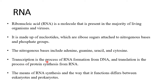Transcription is the process of RNA formation from DNA. A strand of DNA is used as a template and copied to make a complementary strand, which is the mRNA. Translation is the process of protein synthesis from RNA — the codes present on the mRNA strand are used to produce the protein. This is how the central dogma works, and it happens in every cell. The means of RNA synthesis and the way it functions differs between prokaryotes and eukaryotes.